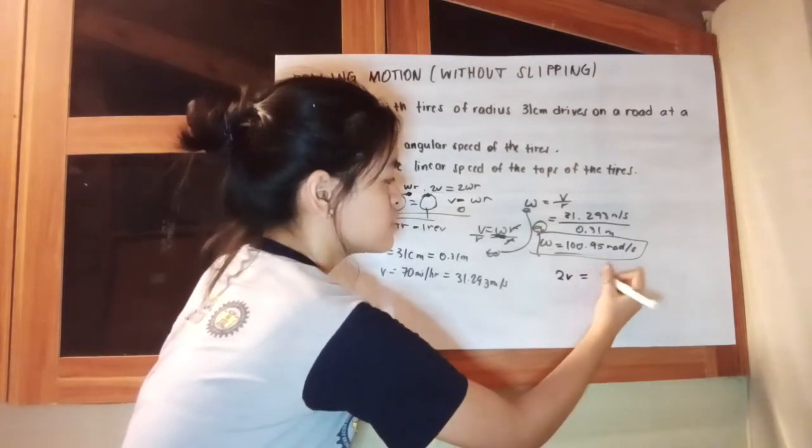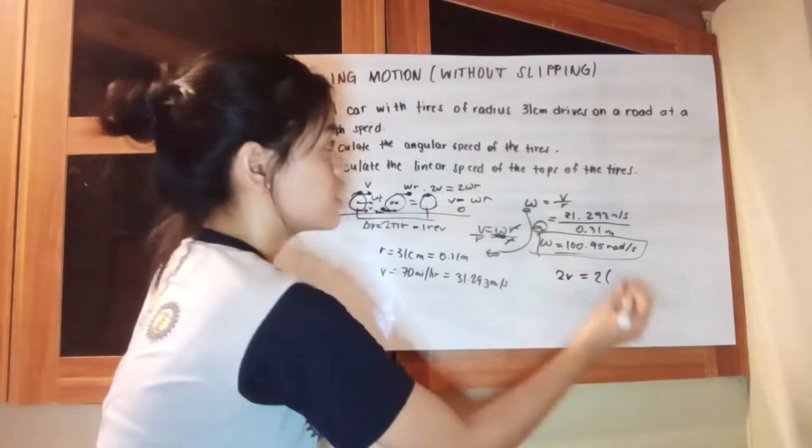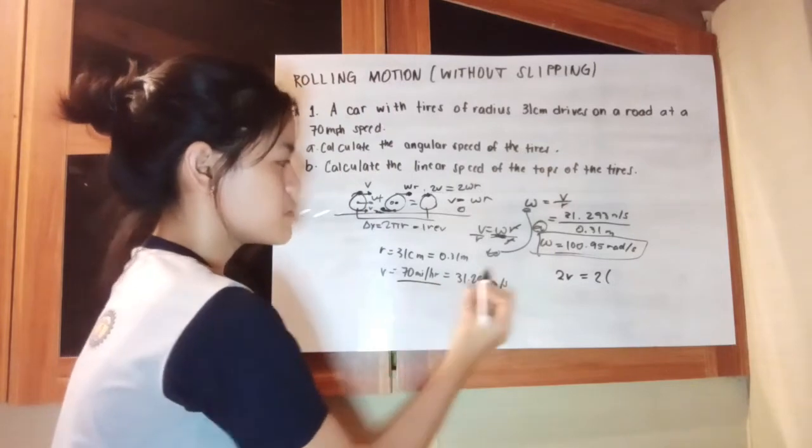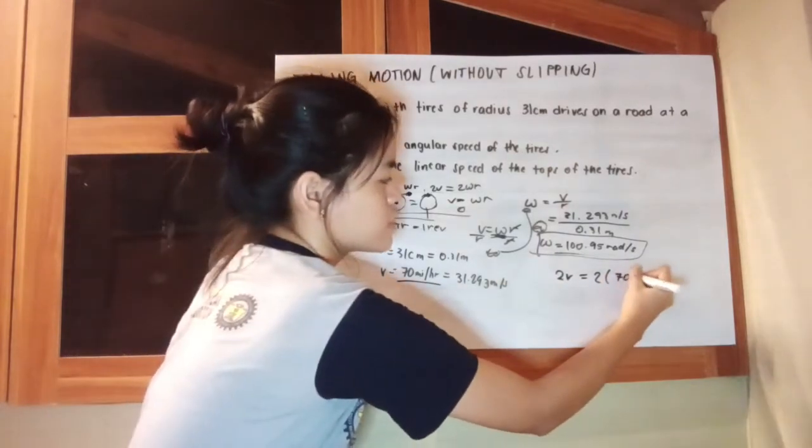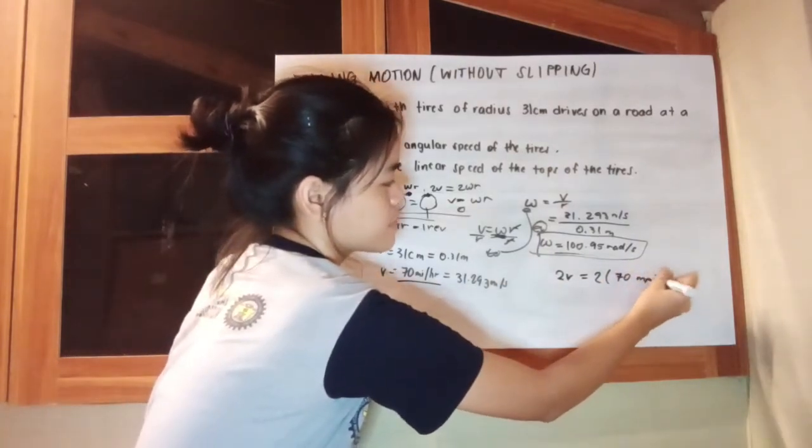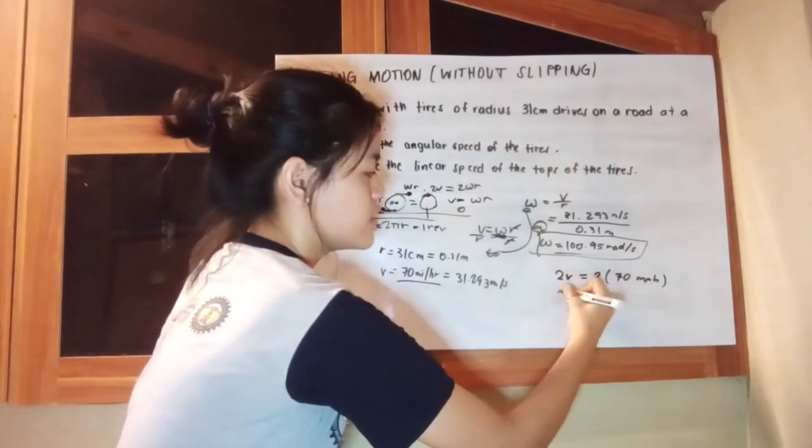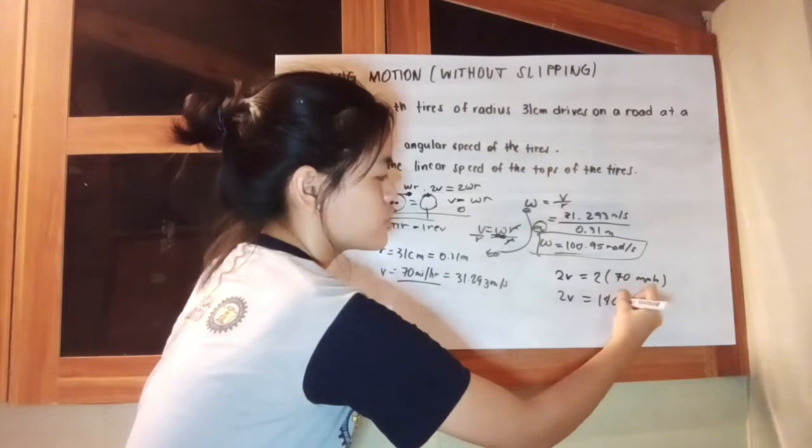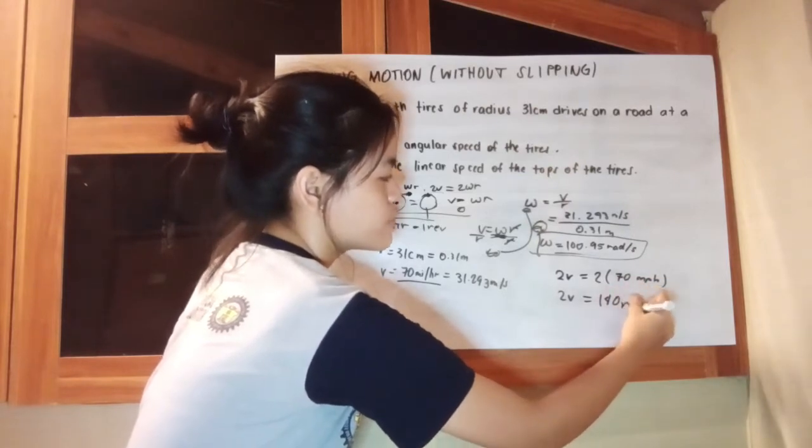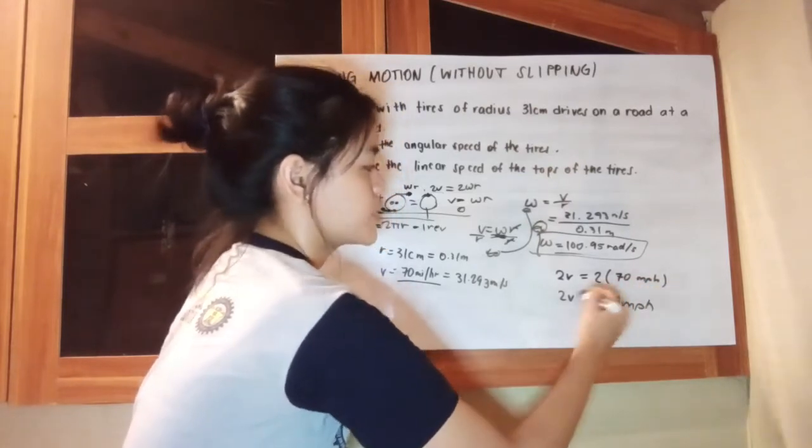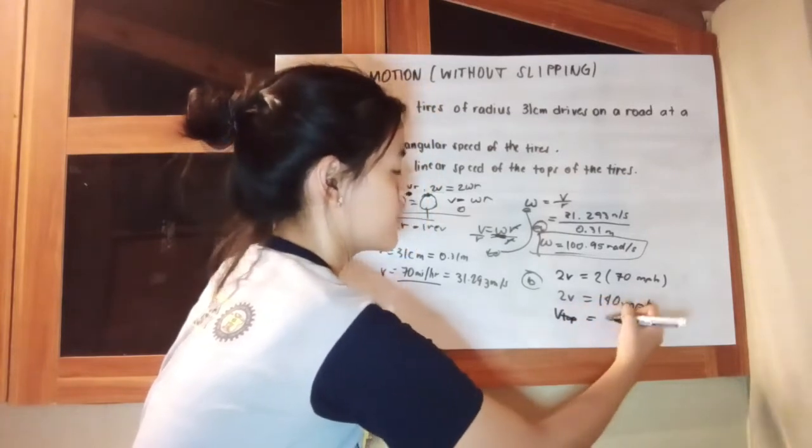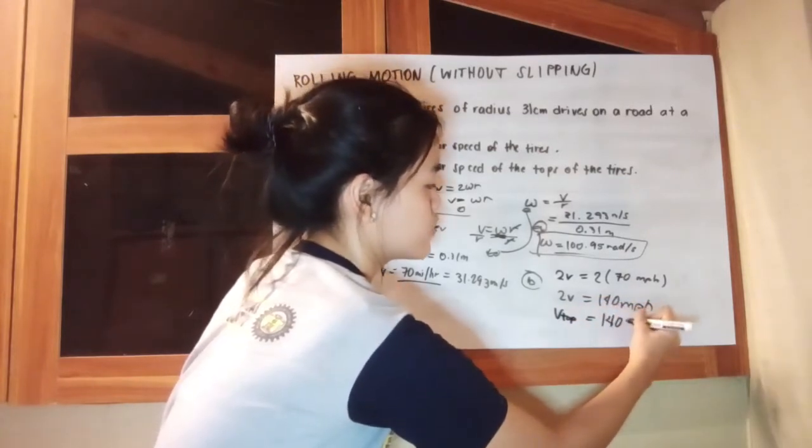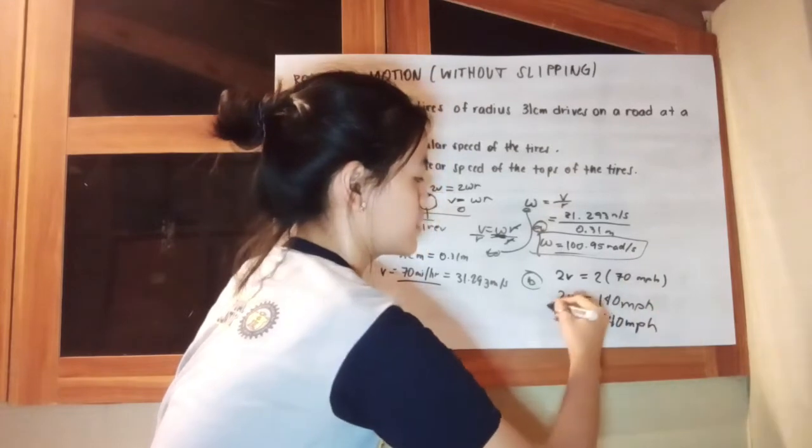We have 2 velocity. That is equivalent to 2 times our initial velocity here of 70 miles per hour. By calculating, our velocity is equivalent to 140 miles per hour. The top of the tires is equivalent to 140 miles per hour.